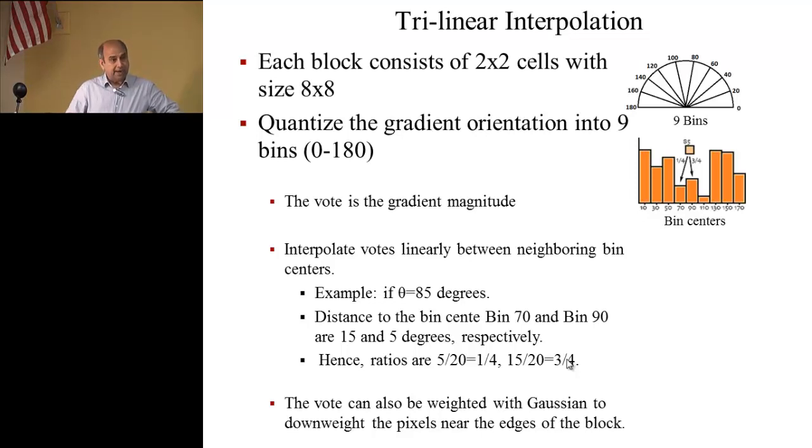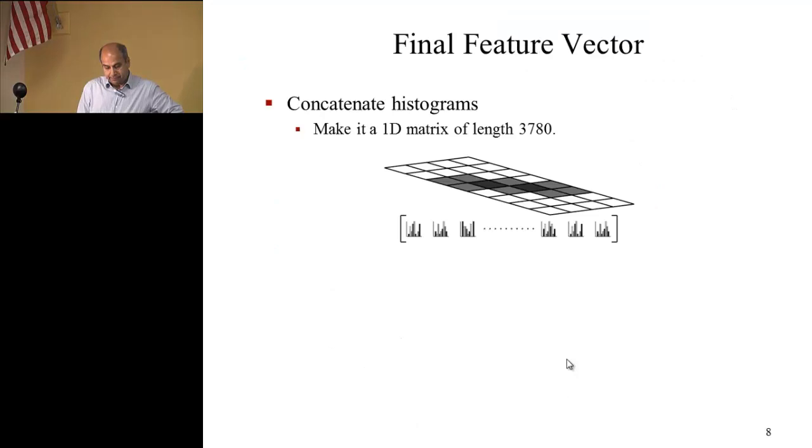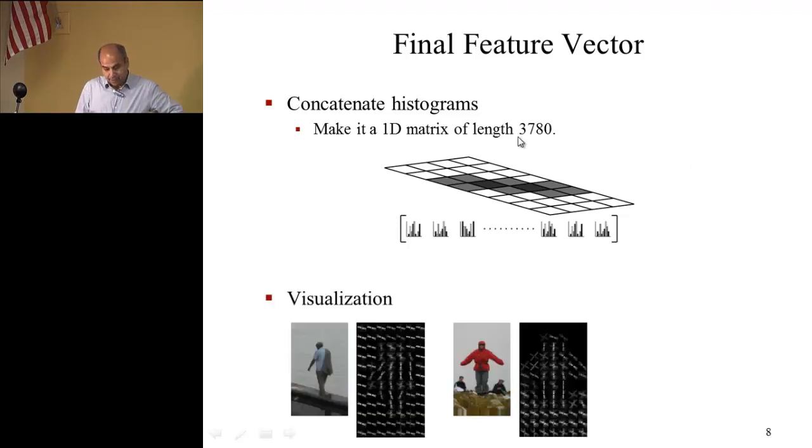That is the HOG. Again, a very popular descriptor. It's used a lot of places, in particular human detection, and it is a kind of global descriptor which looks at the whole image, the typical size of the person, and the final feature vector will be we will concatenate all those 105 histograms. The histograms, each one is nine dimension, will become 3780 dimension feature vector.